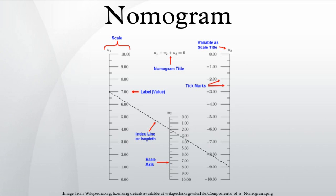Straight scales are useful for relatively simple calculations, but for more complex calculations the use of simple or elaborate curved scales may be required. Nomograms for more than three variables can be constructed by incorporating a grid of scales for two of the variables, or by concatenating individual nomograms of fewer numbers of variables into a compound nomogram.